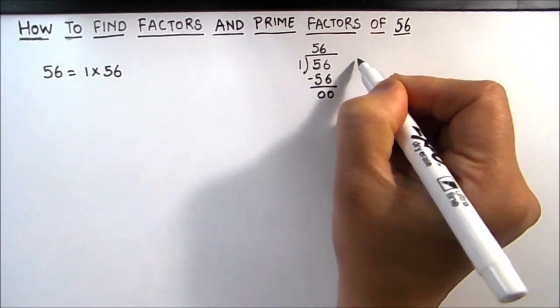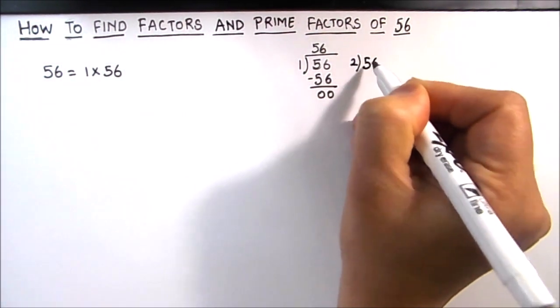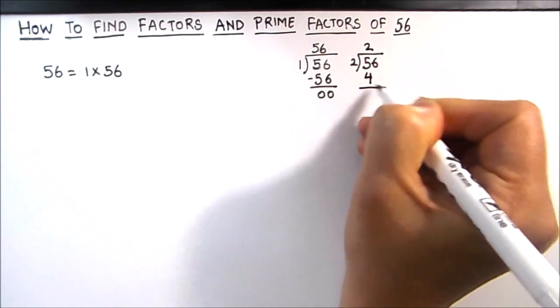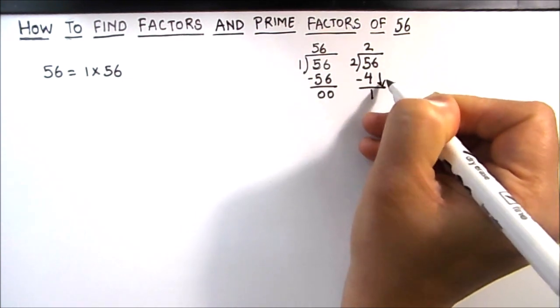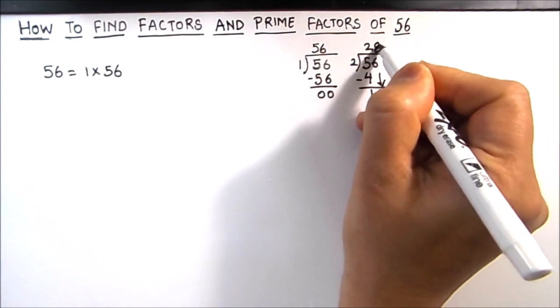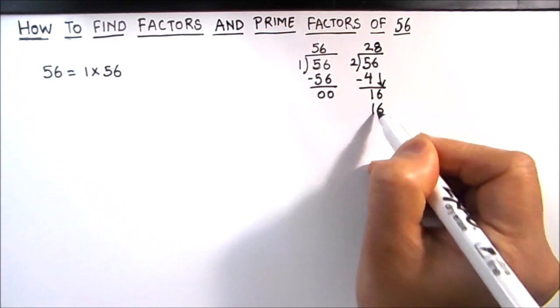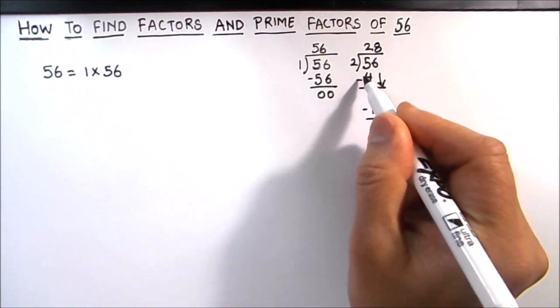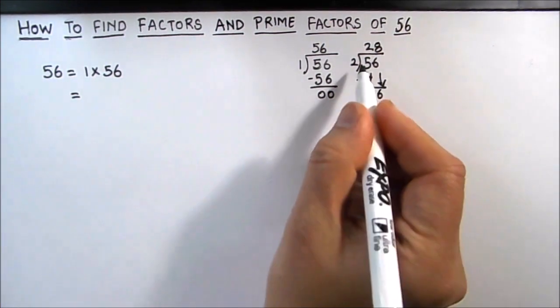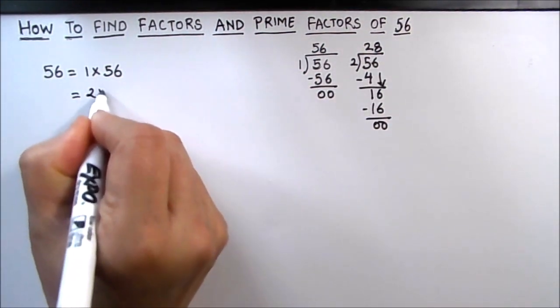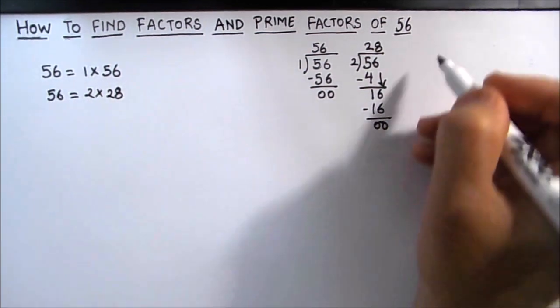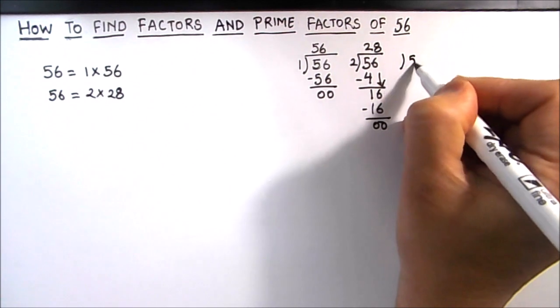Next we'll divide 56 by number 2. So 2 times 2 is 4 and 1 is remainder, then we'll drop down 6, so this is 16. 2 times 8 is 16, so 2 is also a factor of 56. We got two factors as 2 and 28, so 2 times 28 is 56. Next we'll divide 56 by number 3.